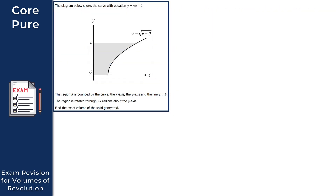Let's get started with question one. We have this diagram showing the curve with equation y equals the square root of x minus 2. The region R is bounded by the curve, the x-axis, the y-axis, and the line y equals 4. This shaded region R is rotated through 2π radians about the y-axis, and we're asked to find the exact volume of the solid generated.